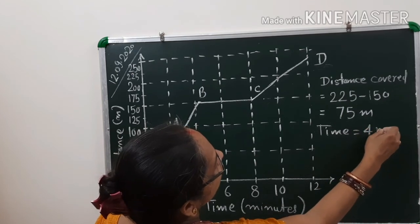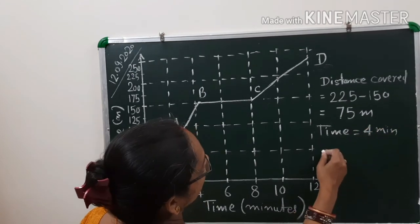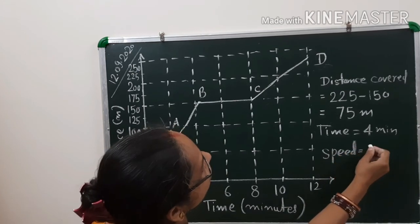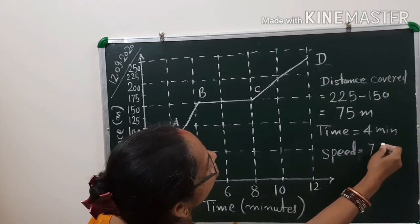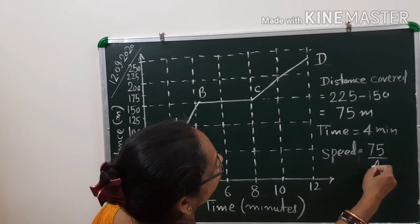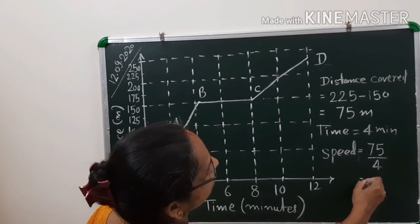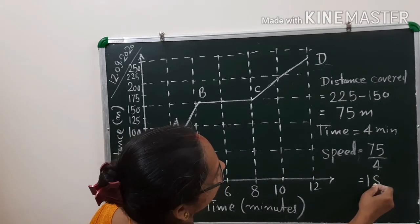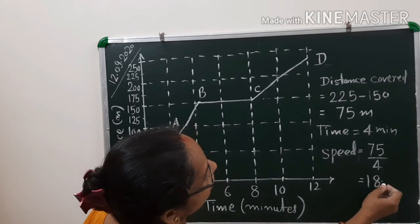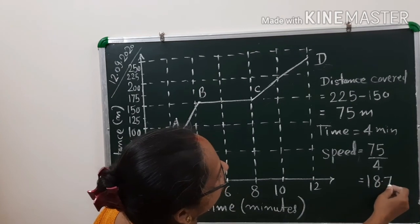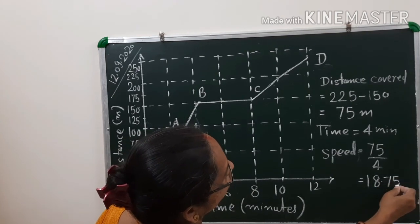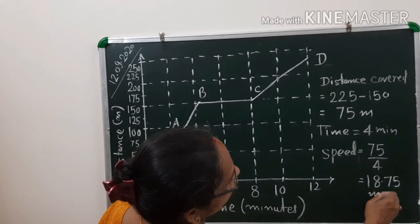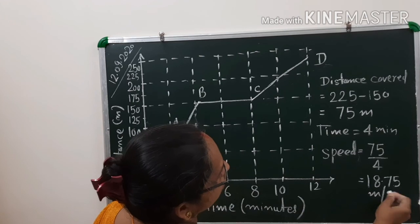So the speed is 75 divided by 4, which gives 18.75 meters per minute. Always remember to write the unit — without it, the answer will be incomplete.